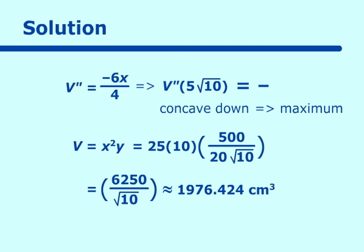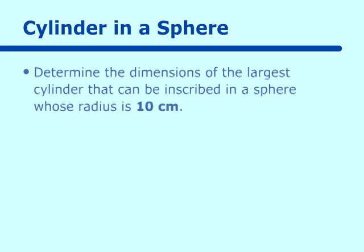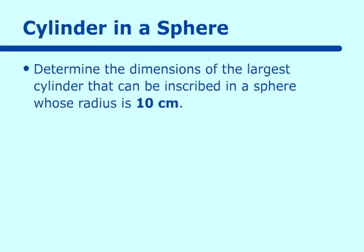So that's a second kind of box problem, a little different from the first. There are a lot of these problems because optimization tends to be one of the more difficult applications of the derivative, which is why I am presenting many problems to you. Let's look at a cylinder in a sphere. The problem reads: determine the dimensions of the largest cylinder that can be inscribed in a sphere whose radius is 10 centimeters.